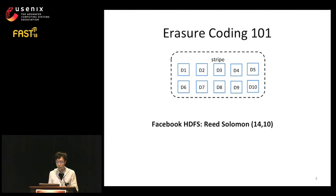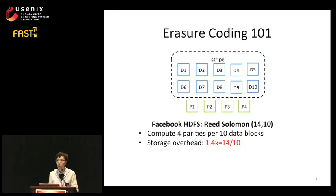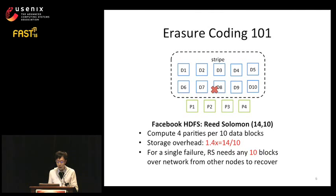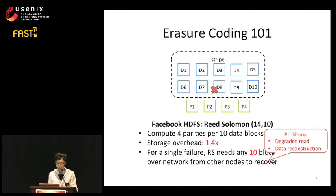Before I go into the details, I will first give some background on erasure coding. With three-way replication, every data block has three copies in the system. Now with erasure coding, each data block has only one copy. As an example, the Reed-Solomon 14/10 code developed at Facebook groups every ten data blocks into one stripe and computes four parity blocks. The storage overhead is 14 over 10, which equals 1.4x. When a failure happens, this scheme needs to fetch ten blocks over the network to recover the lost block, which brings up two problems: the degraded read problem and the data reconstruction problem.